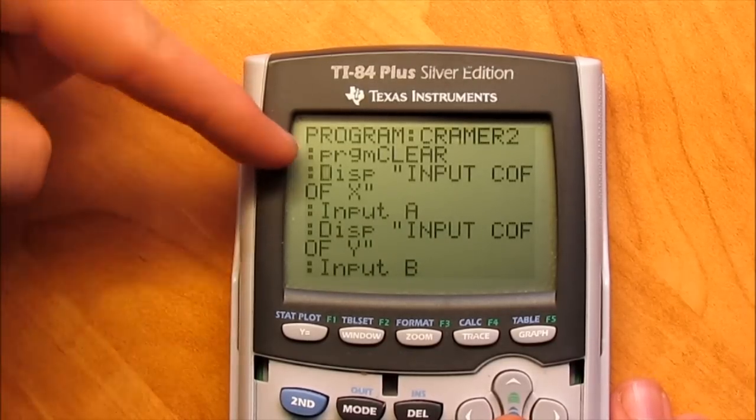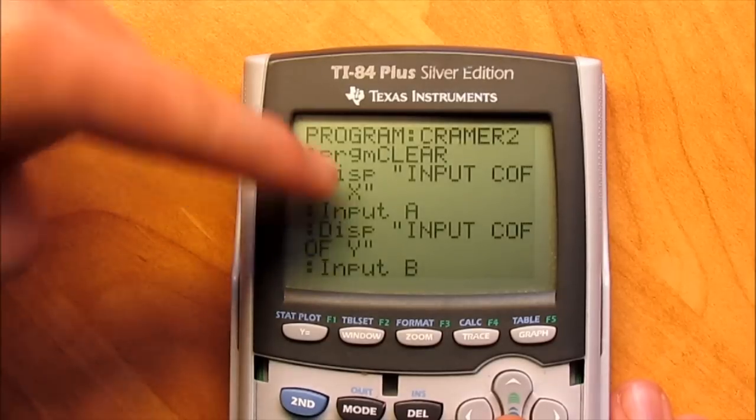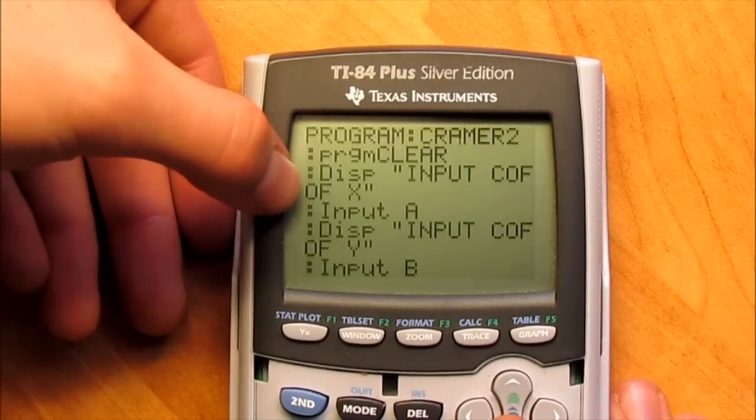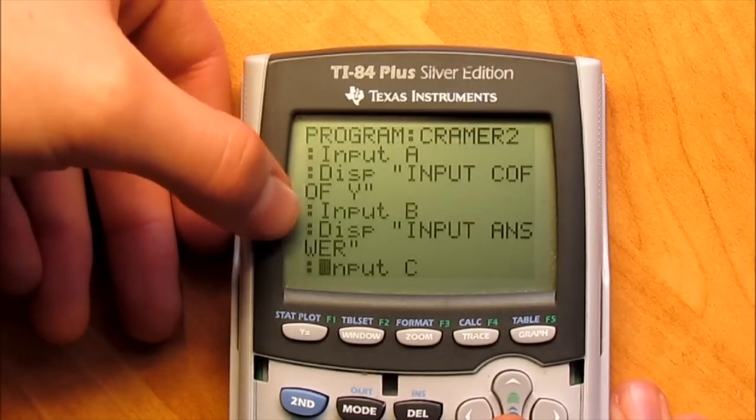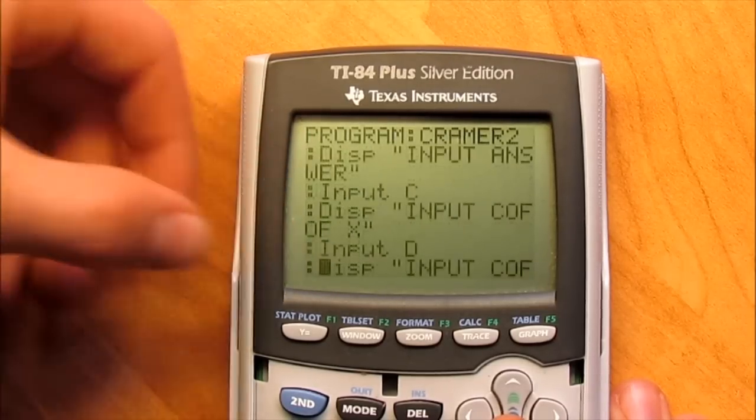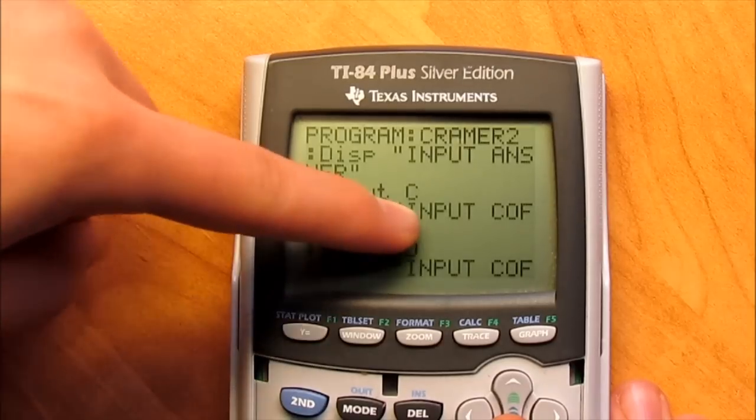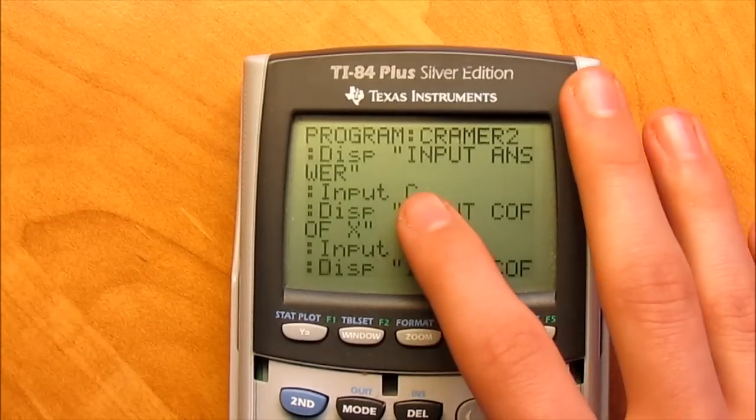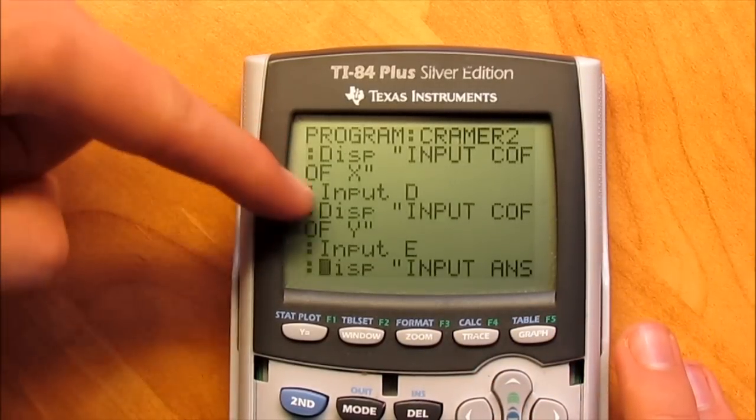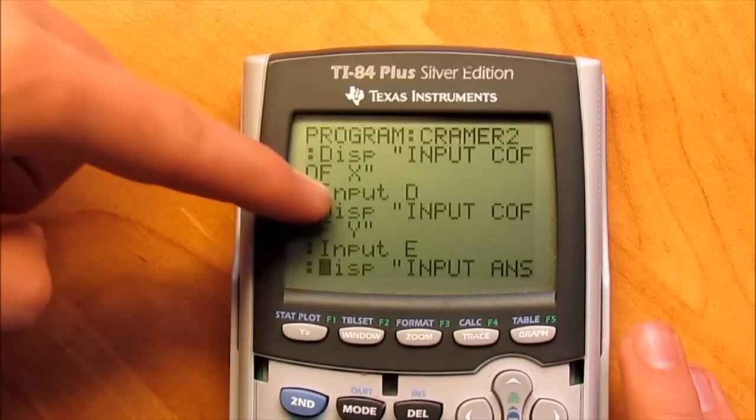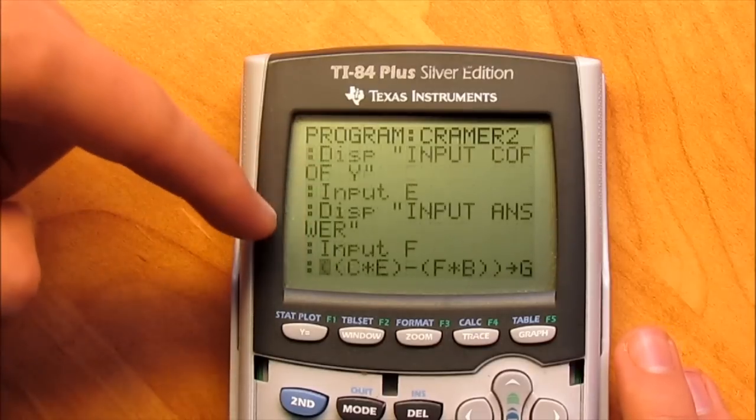After you set that, display input coefficient of x, input a, input coefficient of y, input b, input answer, input c. That's actually asking for it and storing what you put in as c. Same thing here, this is just for the second equation. Input coefficient of x, y, and the answer.